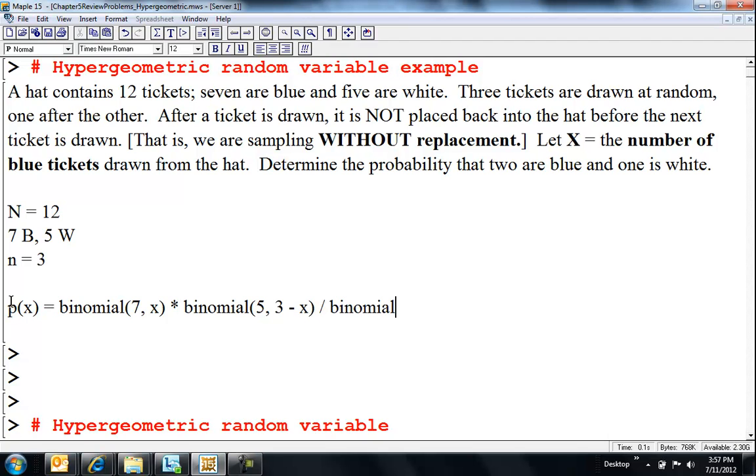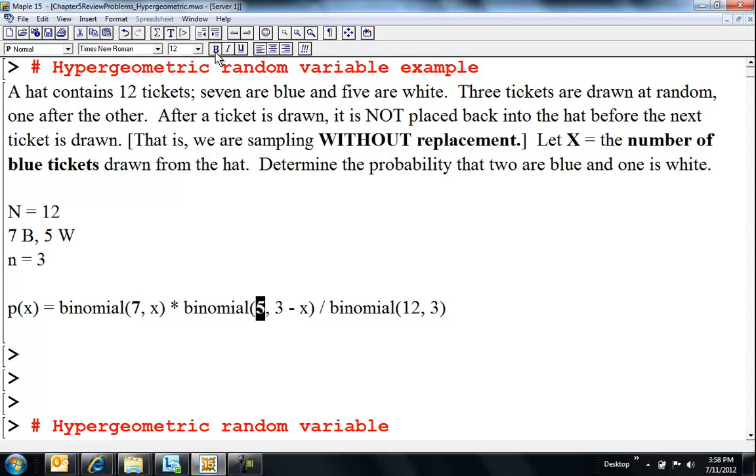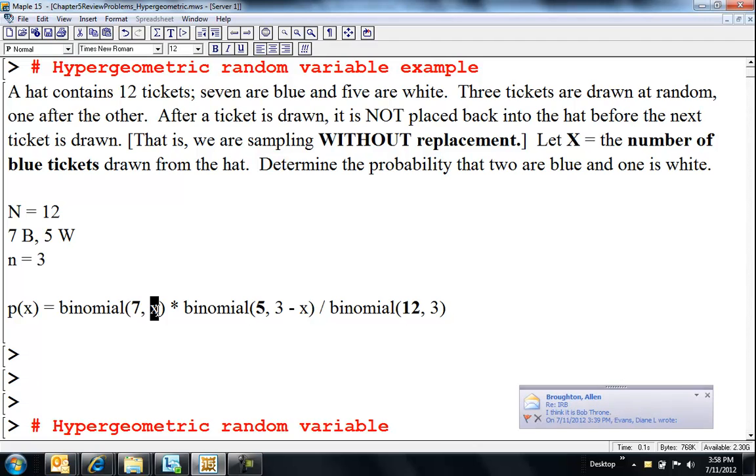So 5 choose, and the X's that aren't blue are going to turn out to be white. So this is going to be 3 minus X because I'm choosing 3 of them. And on the bottom, I'm dividing by the total number of ways to choose 3 tickets out of 12. So you can kind of see the nice property too that these two, let's highlight it, 7 and 5 are adding up to 12 down here. So 12 is my population size, and the population is made up into two categories, 7 blues or 5 whites.